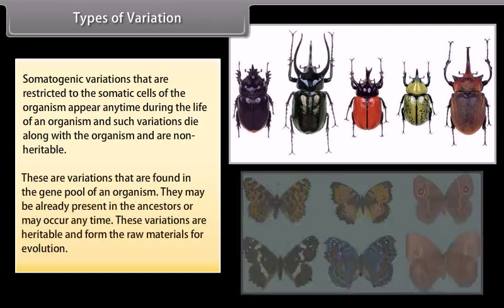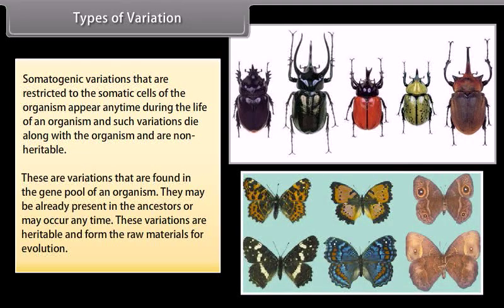Germinal variations are found in the gene pool of an organism. They may already be present in the ancestors or may occur any time. These variations are heritable and form the raw materials for evolution.